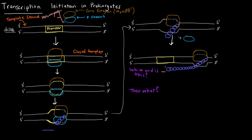And the reason it's called the closed complex is because these two strands of DNA are wound around each other and have not been separated. So what needs to happen now is the helix needs to be unwound and forms the open complex. So once we have this open complex form, the RNA polymerase, the holoenzyme, can begin to make RNA.